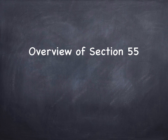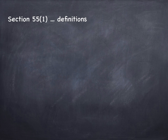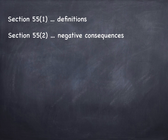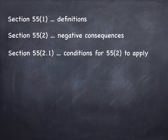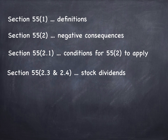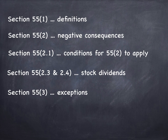I'm going to give you a simple overview of what the section looks like. 55.1 contains the definitions. 55.2 outlines the negative consequences, i.e. what happens if your transaction or series of transactions falls under this provision. 55.2.1 tells you the preconditions that will cast you into the net of 55.2 — what has to happen for 55.2 to apply. 55.2.3 and 55.2.4 are about stock dividends and things like that, which I'm not going to touch on. 55.3 covers some exceptions, which are important, and there have been big changes in that area as well.